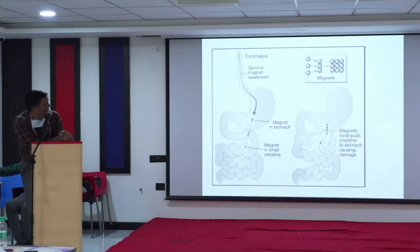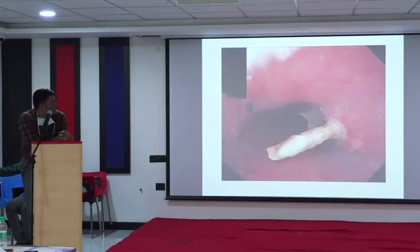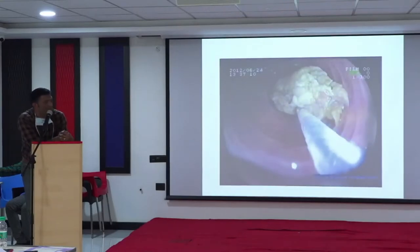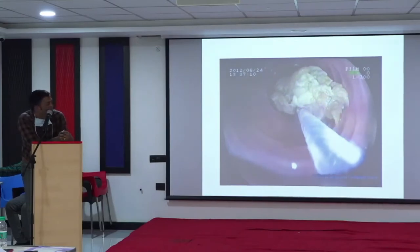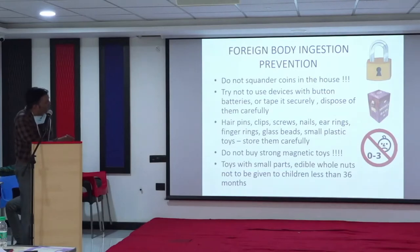This diagram shows how magnets get attracted between different layers of the intestine and can cause a perforation. There is also the example of a chicken bone, and a ball of food someone swallowed that got stuck in the lower end of the food pipe.